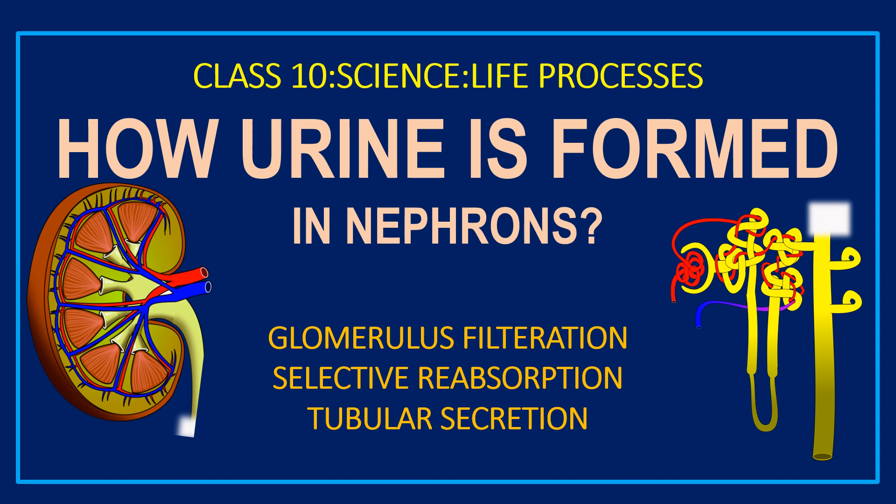Welcome to this video class. In this video, we are discussing about a chapter from class 10 science that is life processes. The important concept of this chapter is how urine is formed in nephrons, and the three stages of urine formation: glomerulus filtration, selective reabsorption, and tubular secretion.